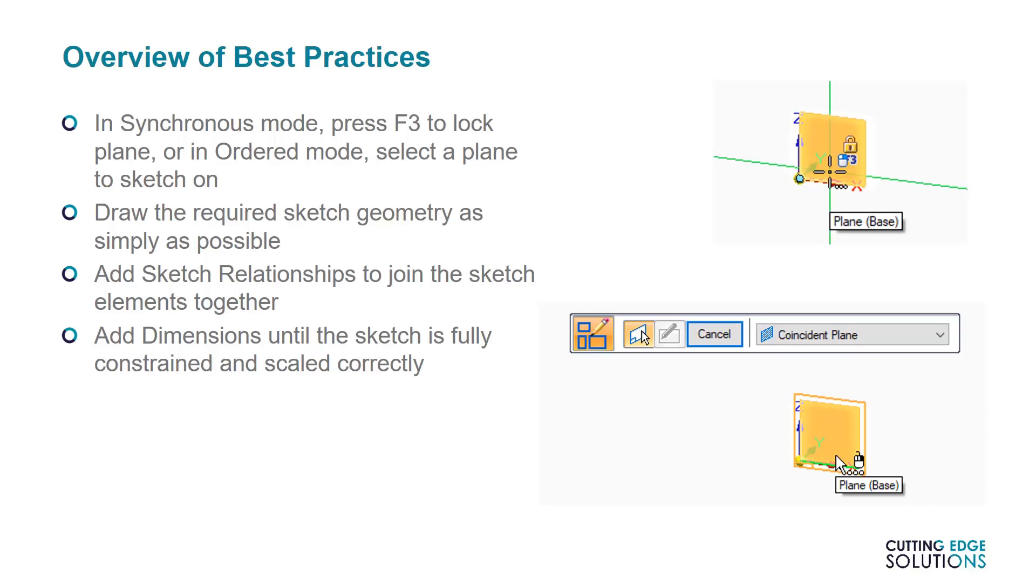Then apply relationships where possible to constrain your geometry. I like to sketch with the base coordinate system as my central reference point, unless I have a good reason not to, as it's something to which we can apply sketch relationships, such as connect or horizontal and vertical constraints. Finally, we advise adding a few dimensions, but not too many, in order to fully constrain the sketch.